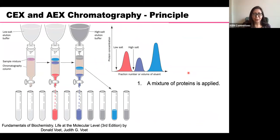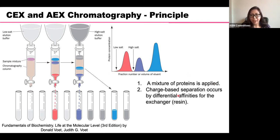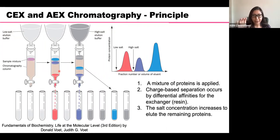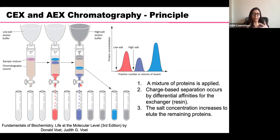Talking about cation and anion exchange chromatography: a mixture of proteins is applied to the column and charge-based separation occurs by differential affinities for the exchange resin. In cation exchange, you have a negatively charged resin; in anion exchange, you have a positively charged resin. Separation is based on salt concentration — at low salt, molecules bind, and then you increase to high salt concentration to elute proteins. Proteins that bind more strongly to the resin require higher salt concentrations to be released.